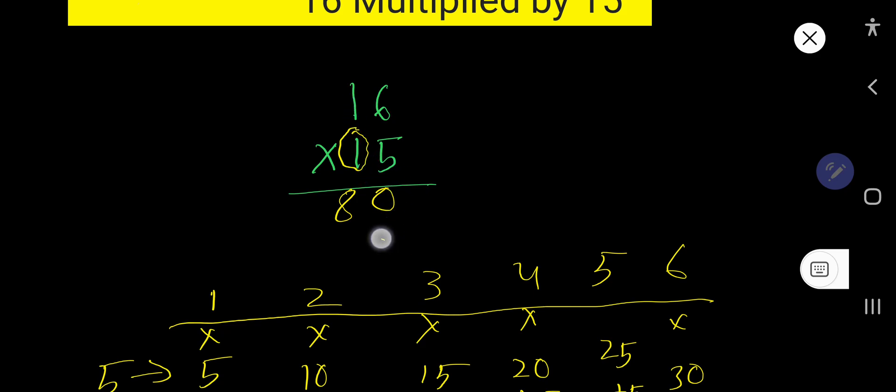So the first column will have 0 as a placeholder. Since 1 is in the 10th column, the product will come to the 10th column. 1 times 6 is 6. 1 times 1 is 1. At last we need to add these two partial products.